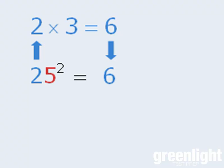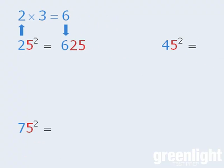From here, just add 25 to the end, and we're done. 25 squared equals 625.